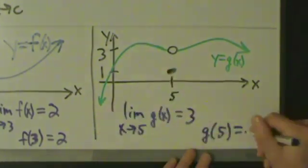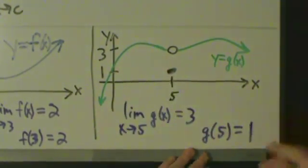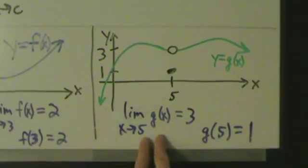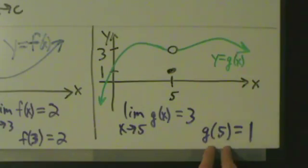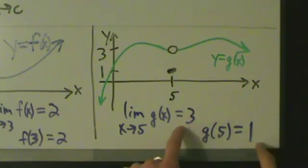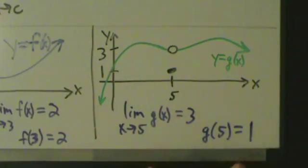So we have this hole here. So g of 5 equals 1. So the limit as x approaches 5 of g(x) and the actual value of the function at x equals 5, those are different. So that means the function is not continuous.